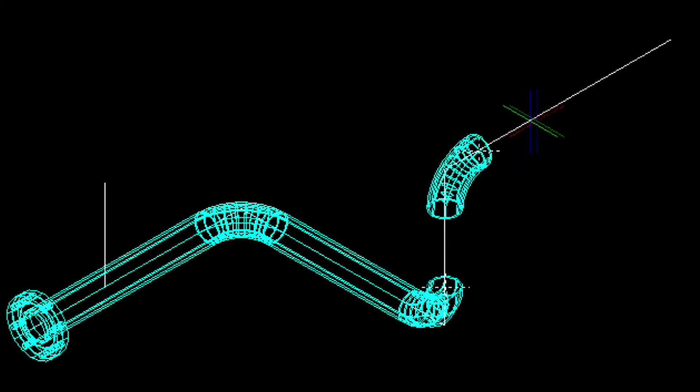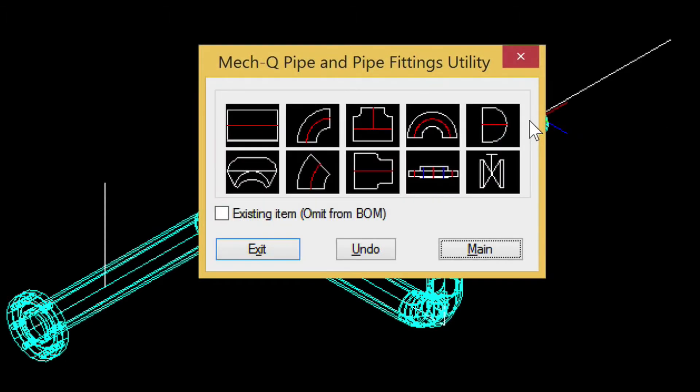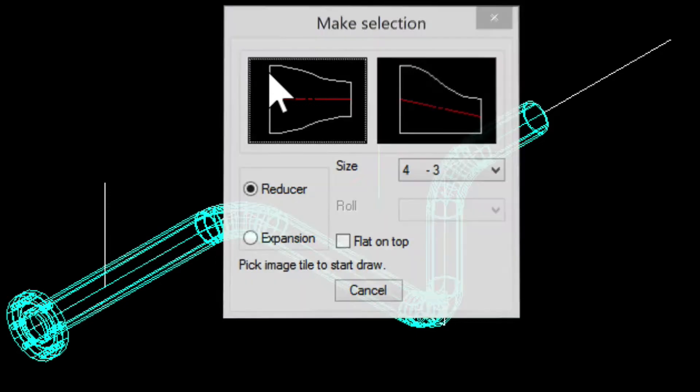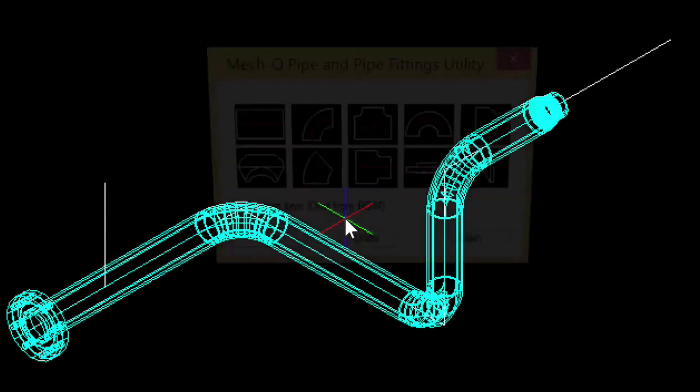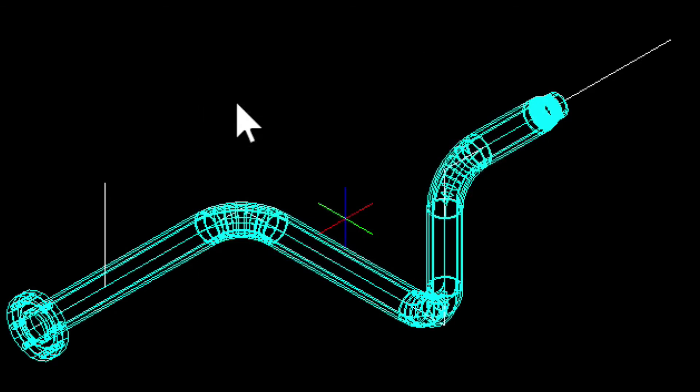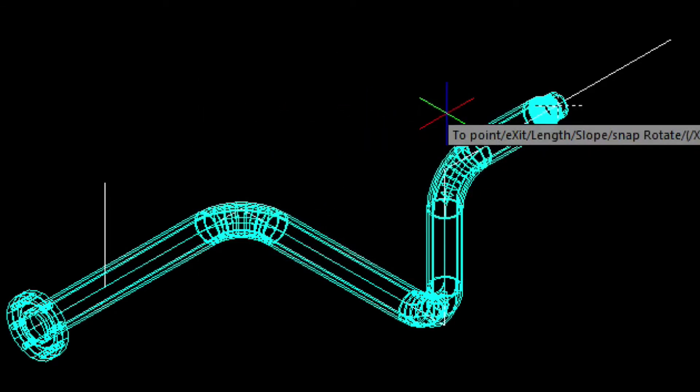Let's go ahead and select the reducer from the main piping dialog. Here, you'll have the choice whether to use concentric or eccentric reducers. Let's choose a 4x3 reducer by just clicking directly on the thumbnail. Notice now how MEC-Q recognized the size of pipe that we're downsizing to.